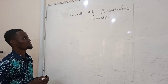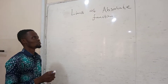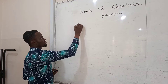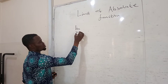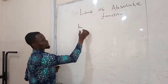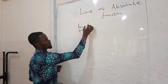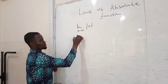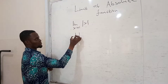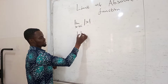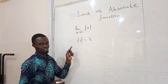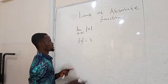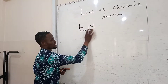We are here to solve the limit of an absolute value function. If you have a limit as x goes to some value c, then you have the absolute of x. This is the absolute sign. If you put a negative inside, it turns into positive. If you put positive inside, it stays positive. That is the absolute sign.